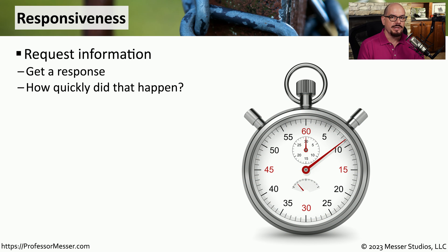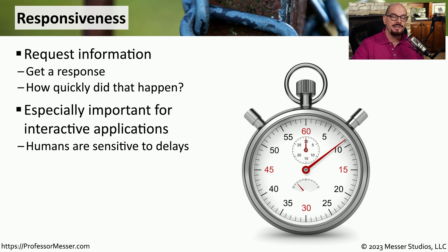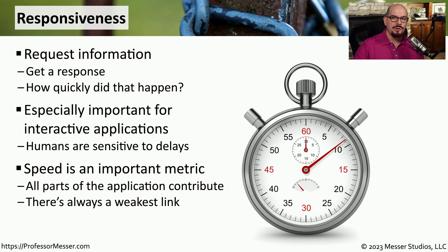Another important infrastructure consideration is responsiveness. When we send a request to a service, we're expecting a response back as quickly as possible. As humans, we tend to be very sensitive if there is a delay in a response. This is a common metric associated with interactive applications where we're asking a request of a service and then waiting to receive the response. Responsiveness can also be challenging to quantify because there may be multiple steps that occur for a single transaction, meaning responsiveness may vary widely depending on what is happening with that particular application.